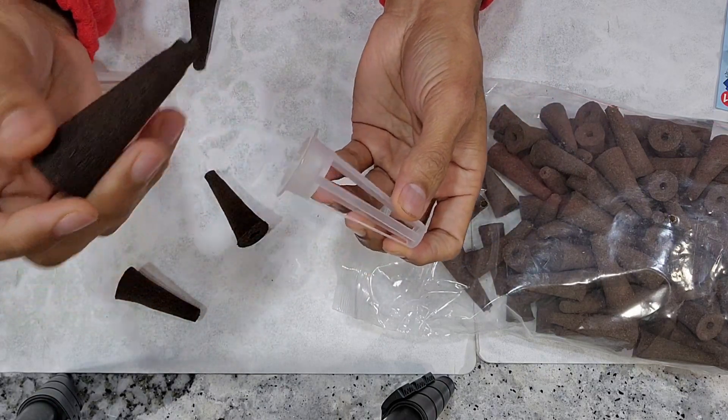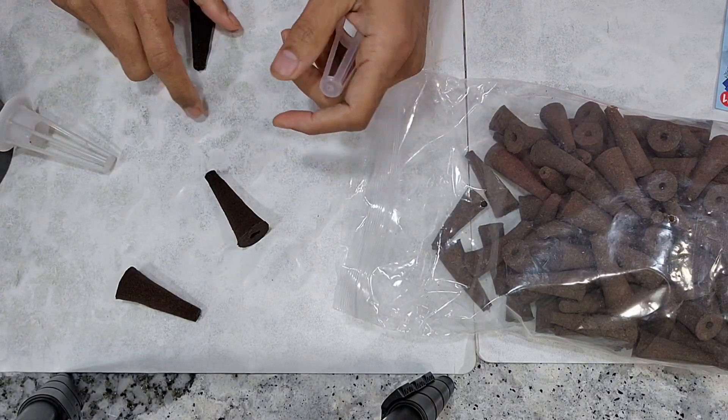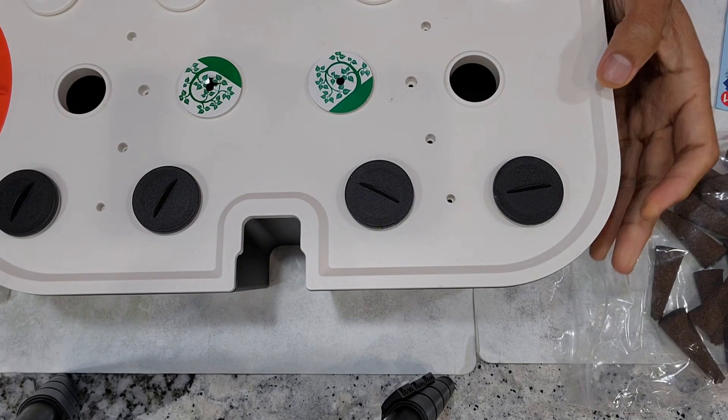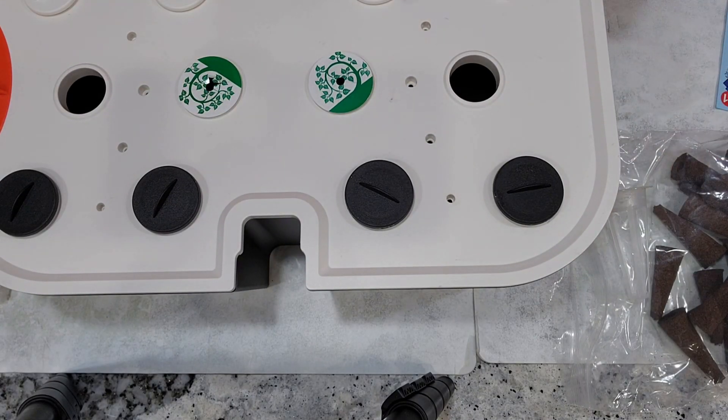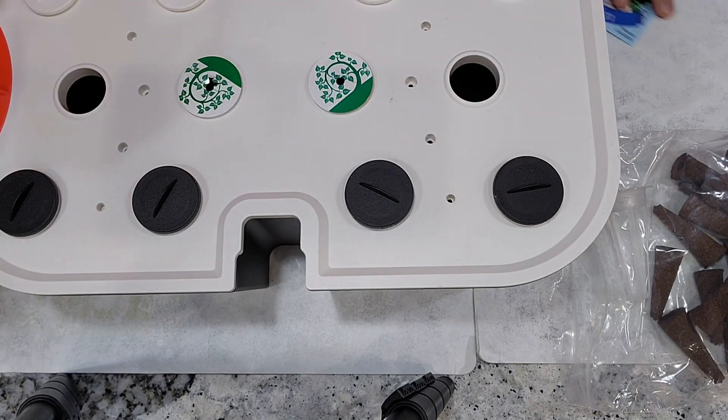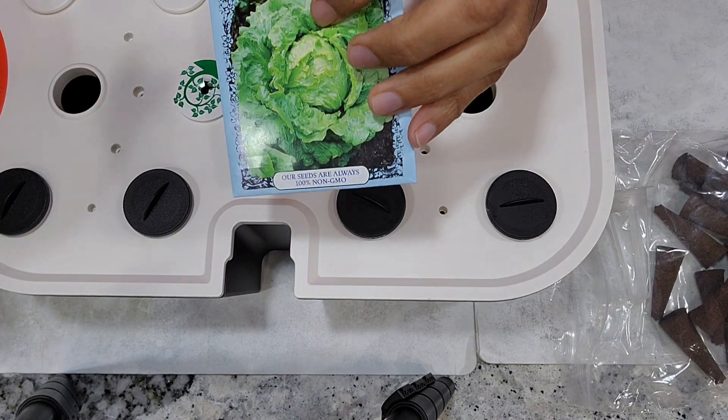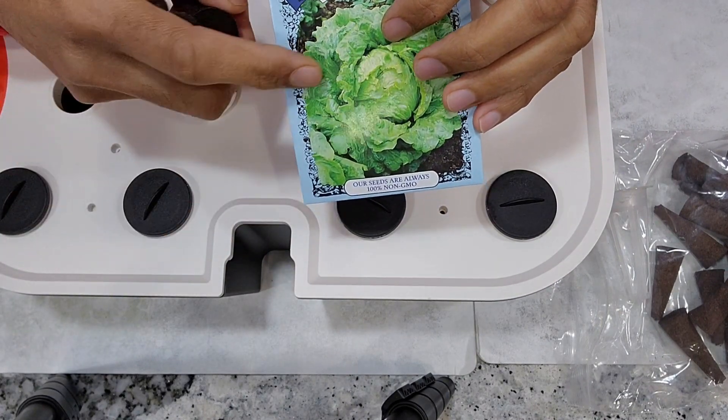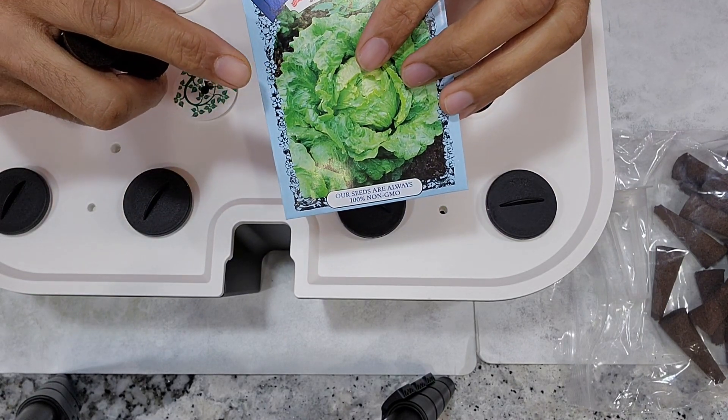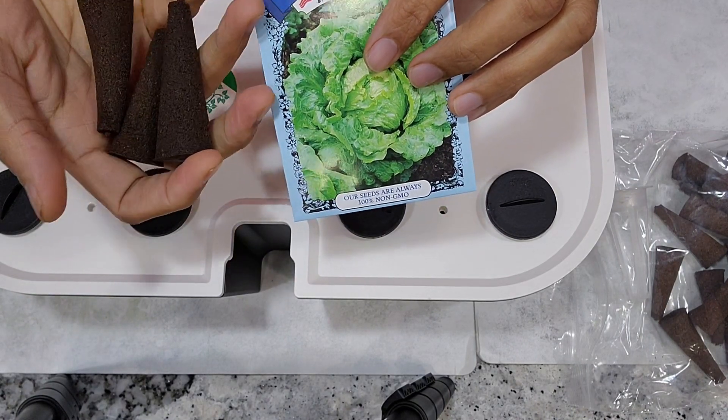So compatibility-wise they're good. Now let's see how they're going to work. I'm about to start a new experiment. So I'm going to use these sponges in this experiment and I'm going to grow some lettuce and see how these sponges are going to work for lettuce seeds. If it works for one, I'm pretty sure it works for everything else.